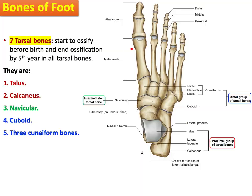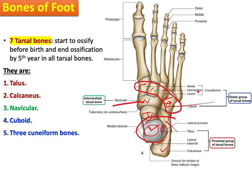Let me quickly remind you — there is a lecture about the bones of the lower limb you can refer to. These are the tarsal bones, seven in number. The superior one is the talus, which articulates with the fibula and tibia. The calcaneus is the heel bone; it articulates anteriorly with the cuboid. The talus articulates anteriorly with the navicular bone. The talus and calcaneus are the proximal group, navicular is the intermediate one, and the cuneiforms — medial, intermediate, and lateral — plus the cuboid form the distal group.